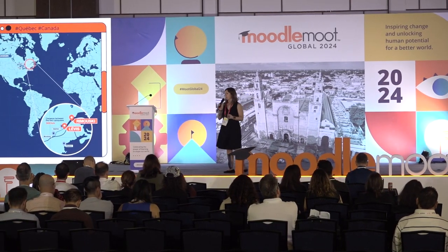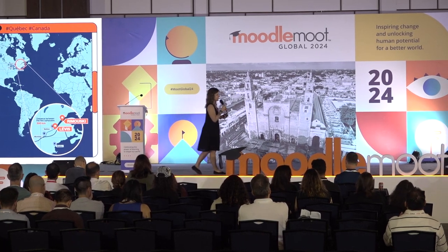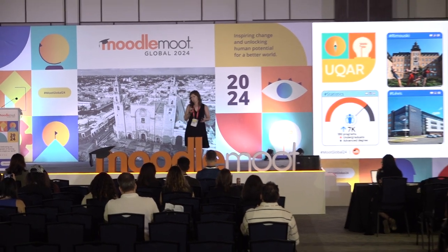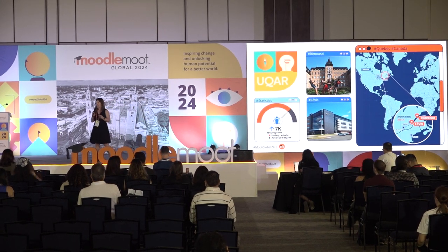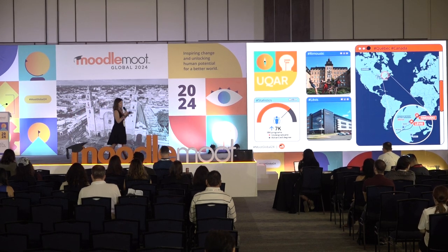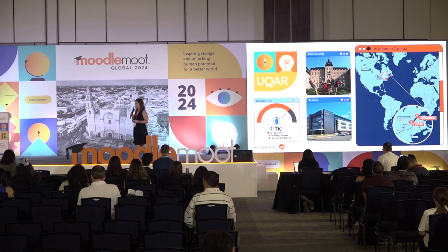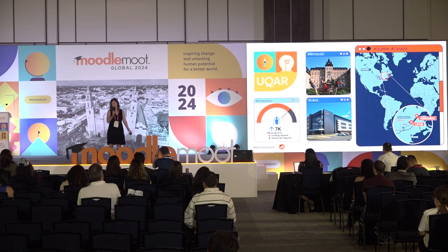I am working at the University of Quebec in Rimouski. It's a small university located in eastern Canada in the province of Quebec. We have about 7,000 students studying on our two campuses that are 300 kilometers apart — one campus in Rimouski and one in Lévy. We have about 186 programs and about 75% of our students are in undergraduate studies.